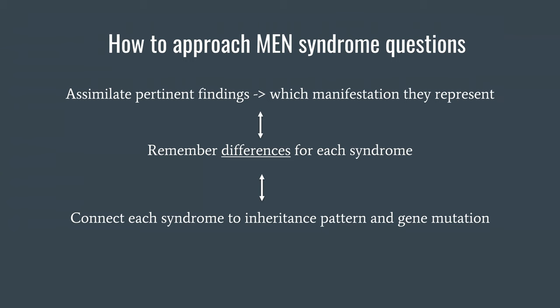You can start from either end of the spectrum and go back and forth. When you have all this down, you can easily transition between various questions targeting gene mutation, presentation, or differences between syndromes, and it won't be any problem whatsoever.